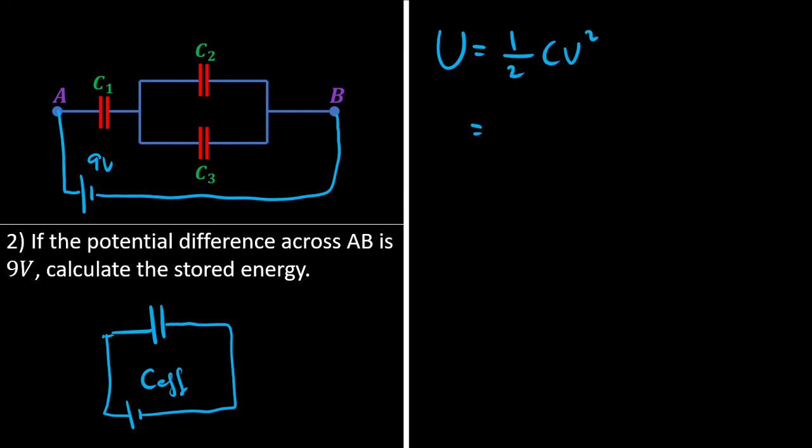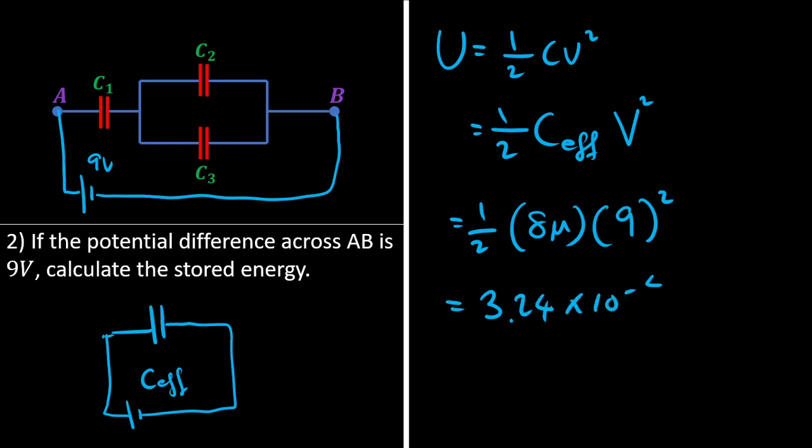So we have C effective and then voltage is just the voltage given. So that is half times 8 microfarads times 9 volts squared, and that will give you 3.24 times 10 to the power of negative 4 joules.